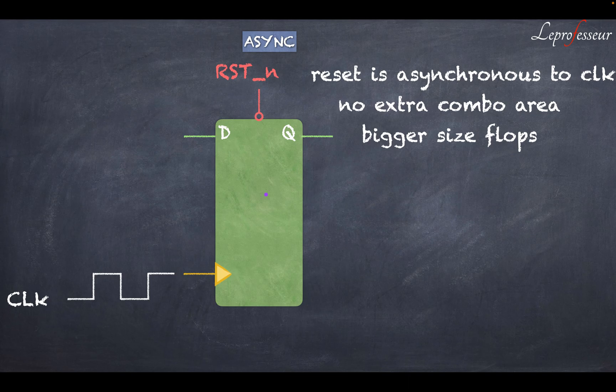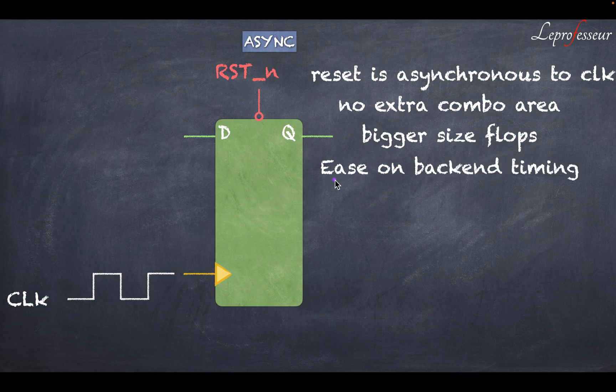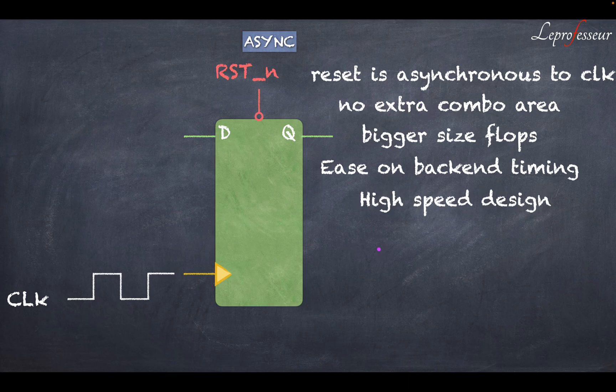That's important. So assertion can be asynchronously, but the de-assertion of the flop needs to be synchronized. And another thing is it will be easy on timing because the reset signal is clearly identifiable. It is not mixed with the data in combo logic, so very clean data path and very clear reset path. Very good for high-speed designs. It is preferred in high-speed designs because there is no delay here due to the combo logic which was present in synchronous style.